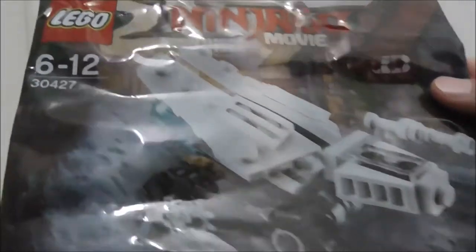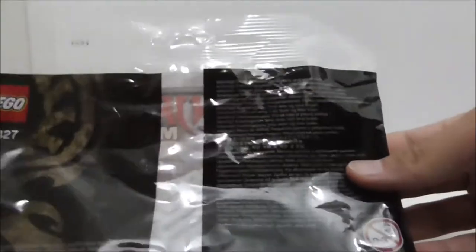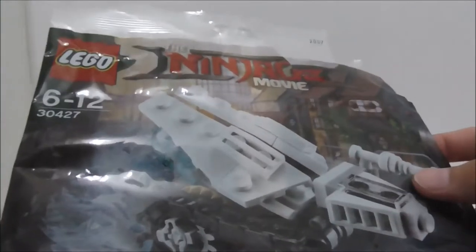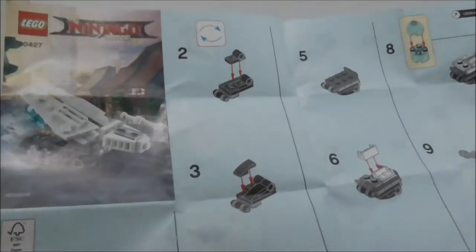This is the ice tank build itself, and this is the back which just shows you all the warnings and stuff. But aside from that, that's pretty much it for the packaging. This is the instruction manual right here.